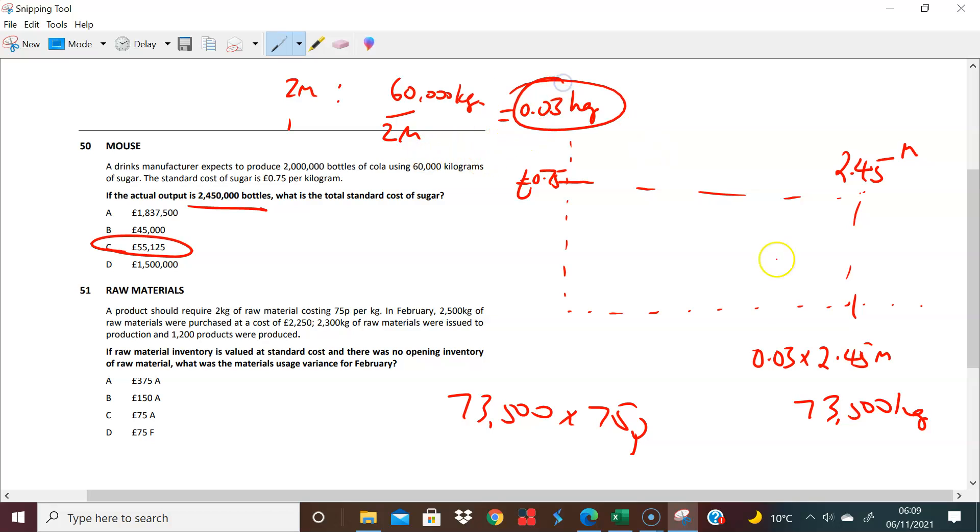Hopefully you can see that. The key point here is get your standard, and when you have your standard, you then apply that standard to the actual number of bottles that are made. That's what we're dealing with here. Not this—this just helps us get the standard. Okay, cool, that's question 50.